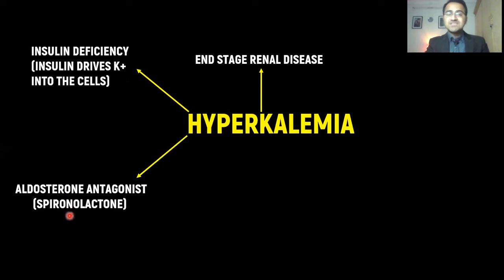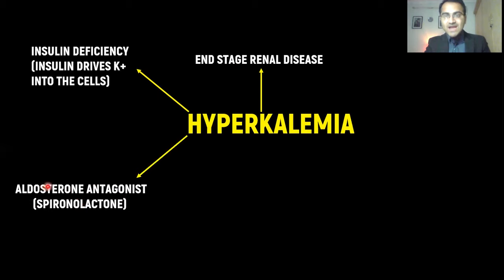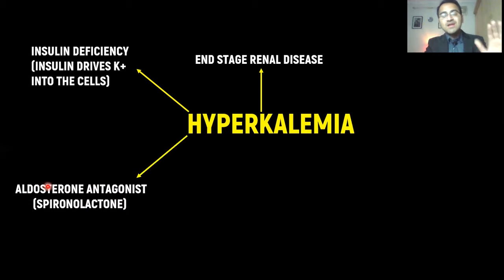Aldosterone antagonists like spironolactone cause hyperkalemia. Basically, aldosterone causes reabsorption of sodium from the kidneys and loss of potassium into the urine. Whenever aldosterone is antagonized by a drug, the loss of potassium into the urine is stopped and potassium levels in the blood increase.